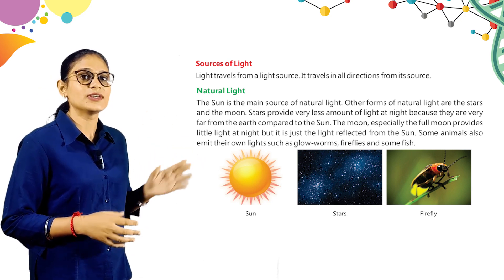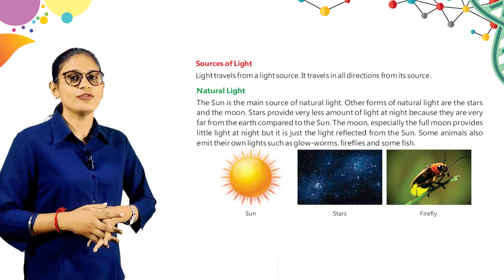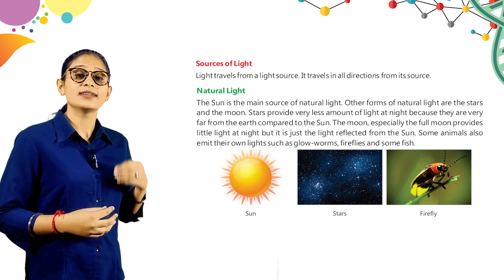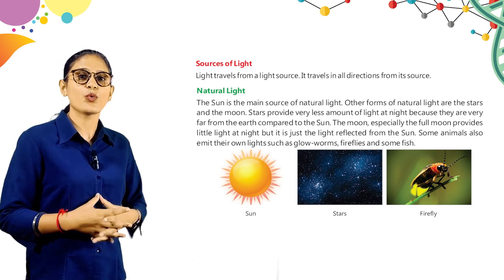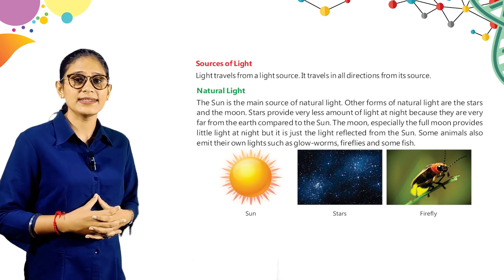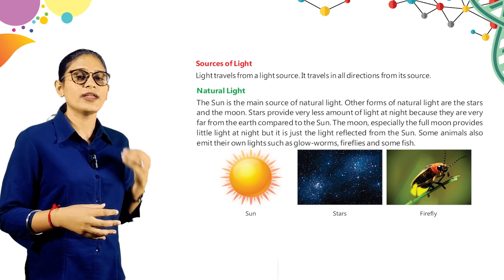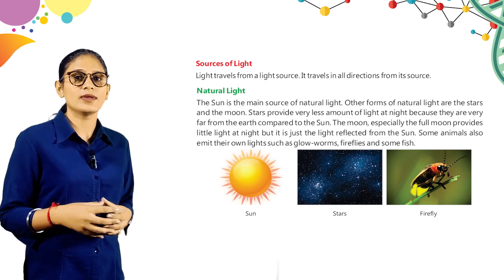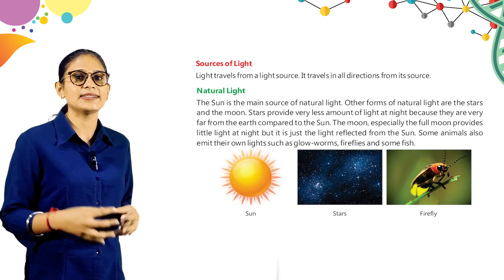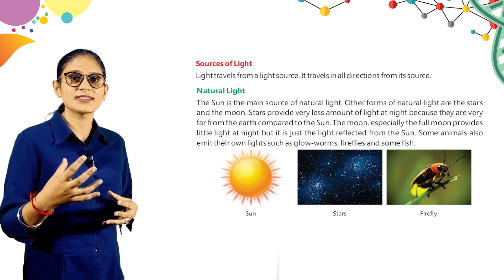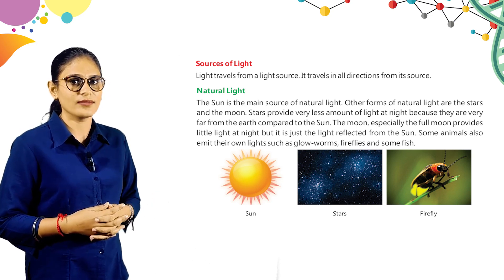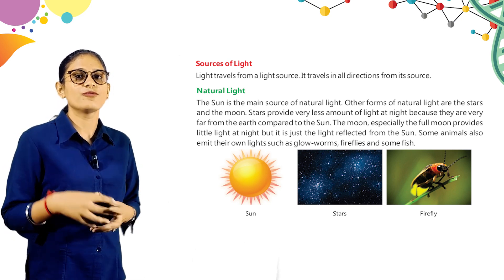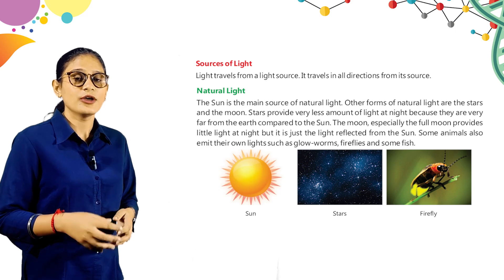Here is natural light. The sun is the main source of natural light. Other forms of natural light are the stars and the moon. Stars provide very less amount of light at night because they are very far from the earth compared to the sun. The moon, especially the full moon, provides little light at night, but it is just the light reflected from the sun. Some animals also emit their own light, such as glow worms, fireflies, and some fishes.